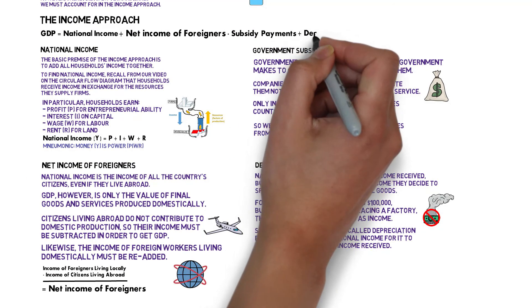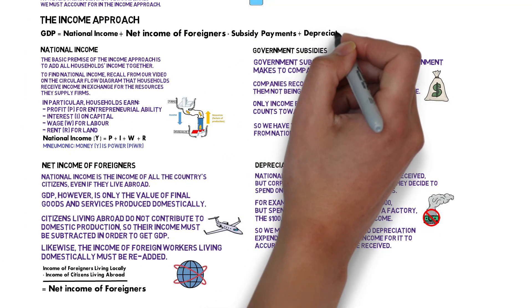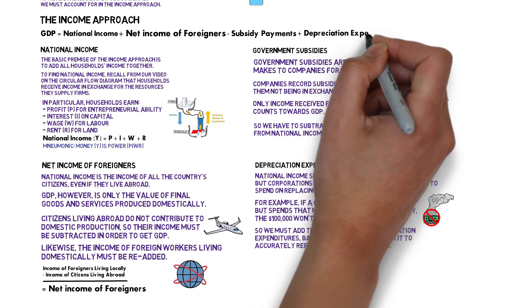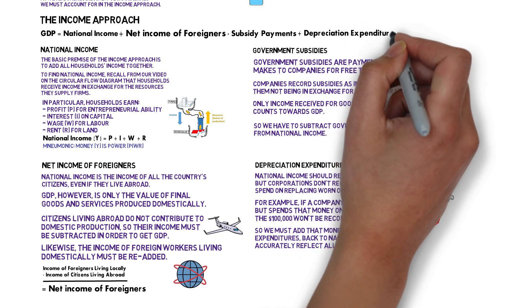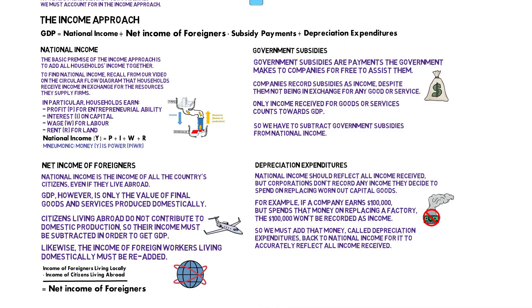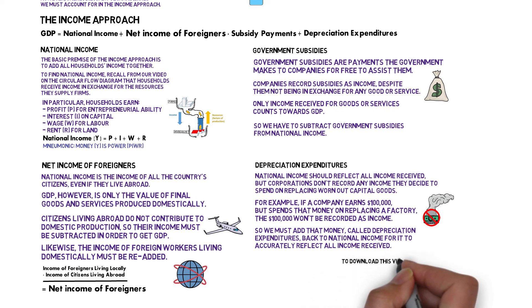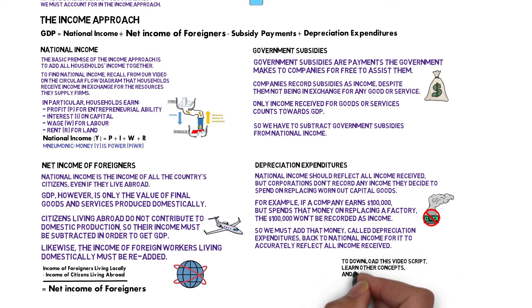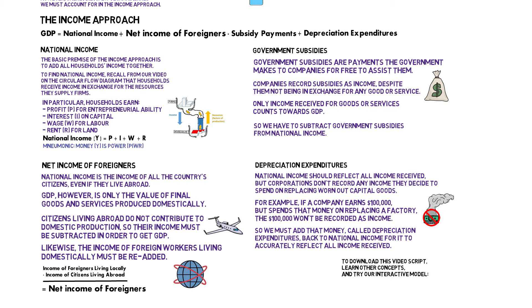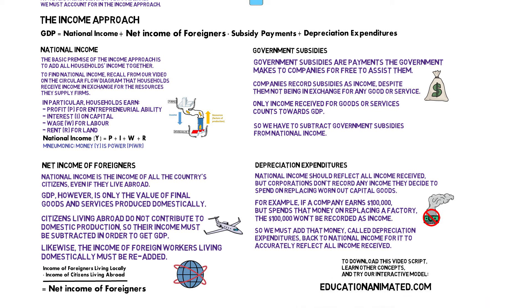And after we add that last thing — depreciation expenditures — back to our equation, then we have the final equation for the income approach. If you'd like to download this video script, learn other concepts, or try our interactive economic model, go to our website, educationanimated.com.